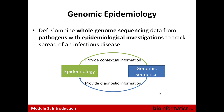I define genomic epidemiology simply as the combination of whole genome sequence data from pathogens — separate from whole genome sequencing of the host or human — combined with epidemiological investigation to track the spread of infectious diseases. The epidemiological data provides contextual information for interpretation of genomic sequence data, and the genomic sequence data provides high-resolution diagnostic information to help shape the direction of the epidemiological investigation.